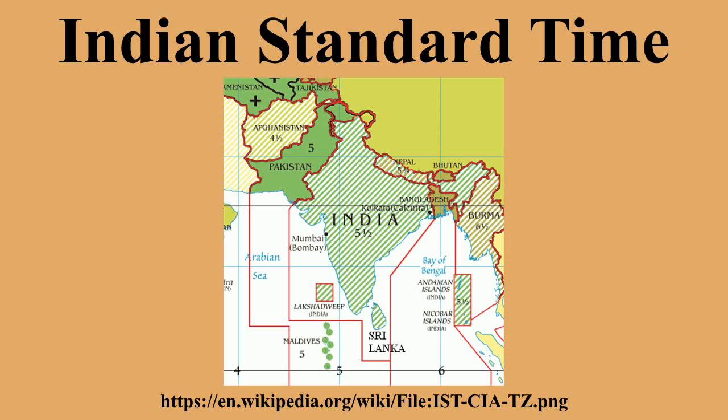After independence in 1947, the Indian government established IST as the official time for the whole country, although Kolkata and Mumbai retained their own local time until 1948 and 1955 respectively. The Central Observatory was moved from Chennai to a location at Shankargarh Fort, Allahabad District,